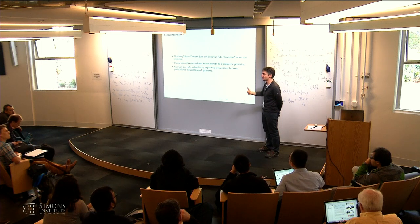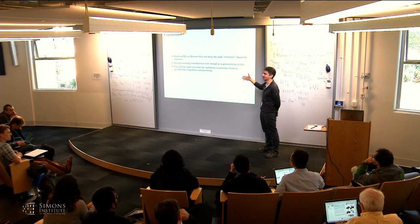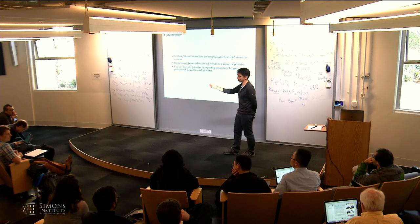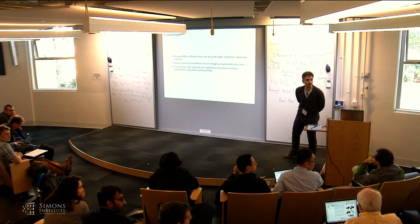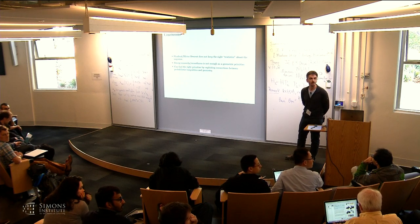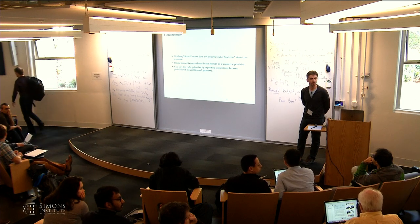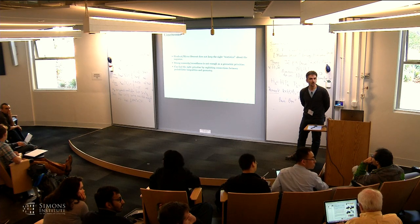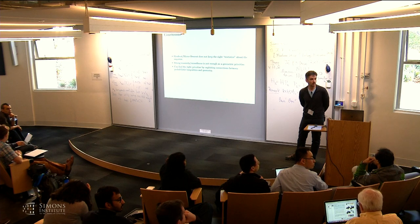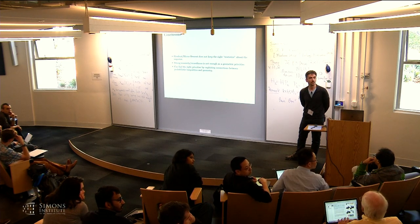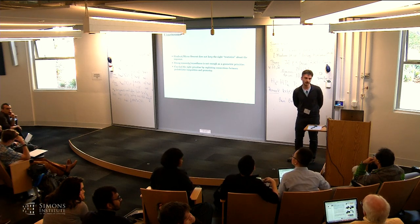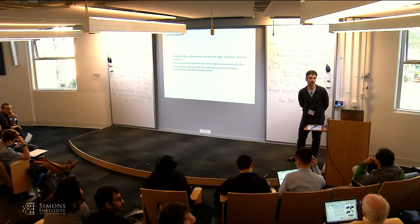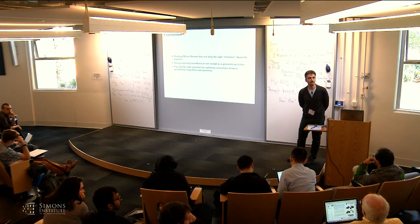The general connection between martingale inequalities and prediction means that if you know such a martingale inequality holds, you get a certificate that an algorithm for online prediction exists — but not immediately the algorithm itself. The U function is the way to make the algorithm explicit and computable. You would want U to be efficiently computable — that's the key challenge. Thank you.